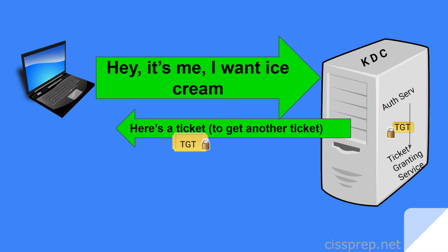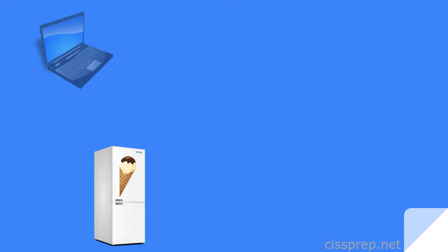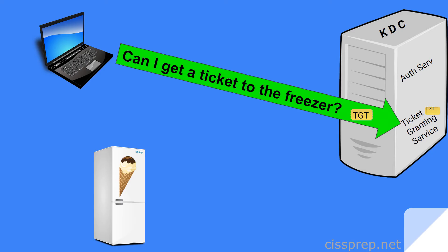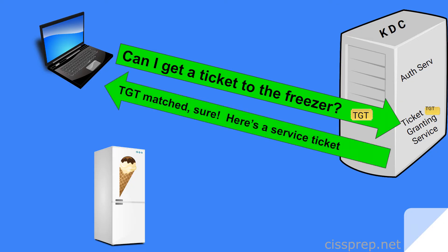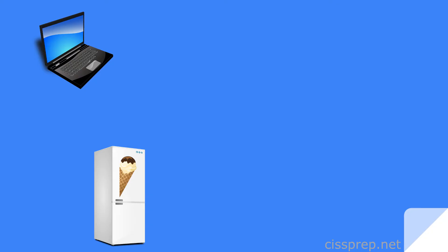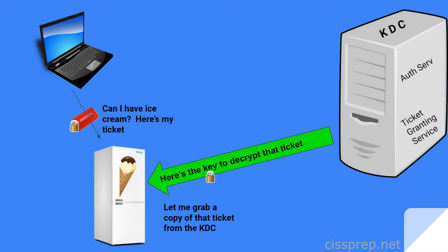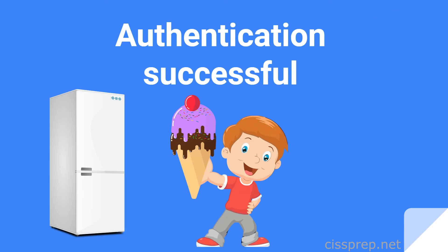The user then provides the TGT, or ticket-granting ticket — that first ticket received — to the ticket-granting service. The ticket-granting service compares that ticket provided by the user to the one provided by the authentication service, and if the two match, the TGS generates something called a service ticket. The user then presents the ticket to the destination server, but it's encrypted with a secret or symmetrical key. Luckily, the ticket-granting service pre-shared that key with the destination server. Once the destination server decrypts the ticket, it gets a copy from the TGS and compares the tickets. If they match, the authentication process was successful and the principal can enjoy his ice cream, so to speak.